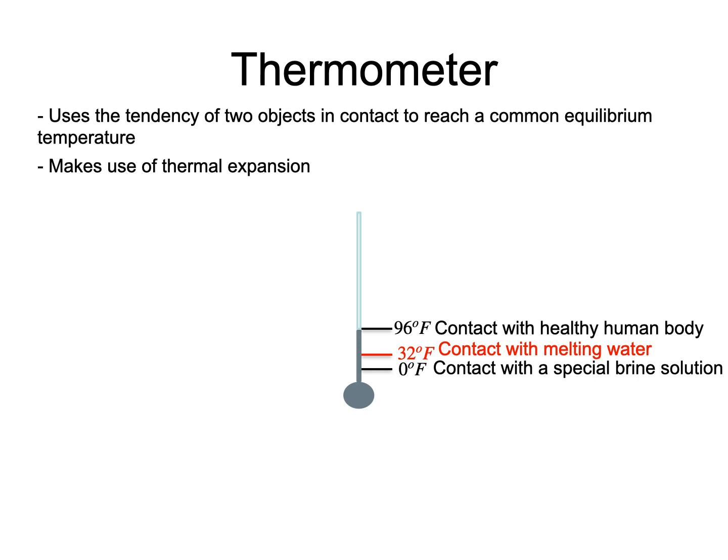This length of mercury column was then easily subdivided in degrees since 64 is a power of 2. With his thermometer calibrated in this fashion, Fahrenheit measured the boiling point of water to be 212 degrees Fahrenheit.